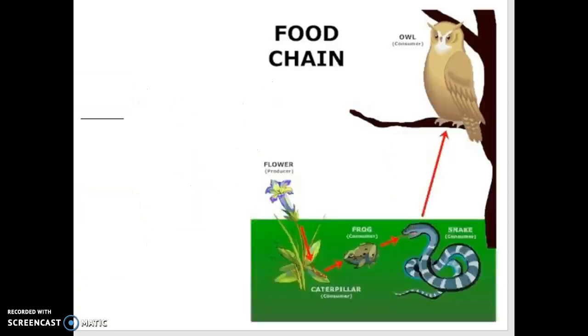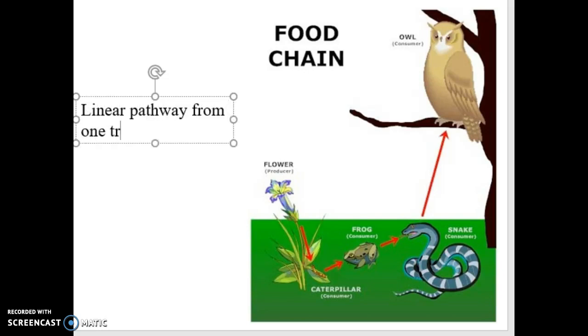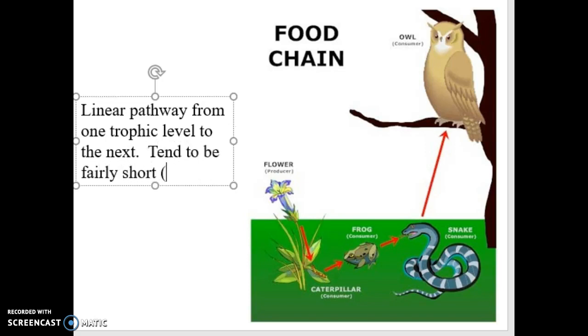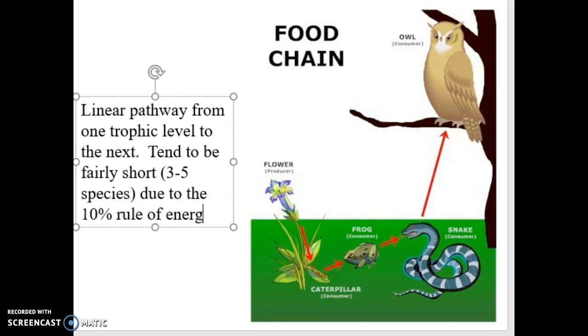Okay, so when we talk about a thing called a food chain, here's the definition I want you guys to remember. Food chain is a linear pathway from one trophic level to the next. These tend to be fairly short, generally three to five species, due to the 10% rule of energy transfer.